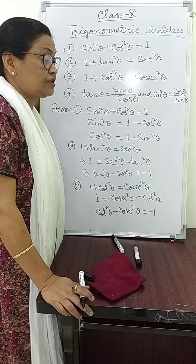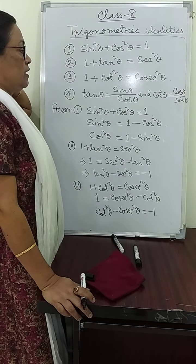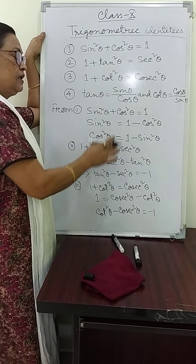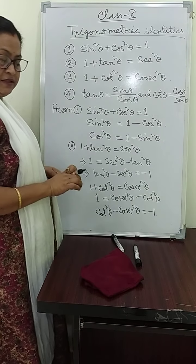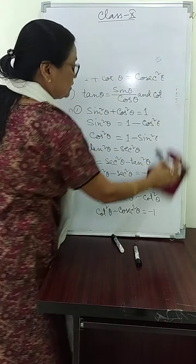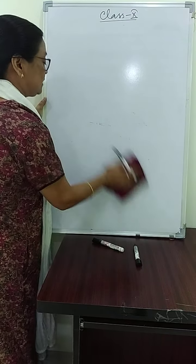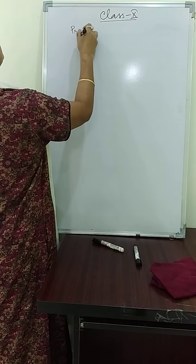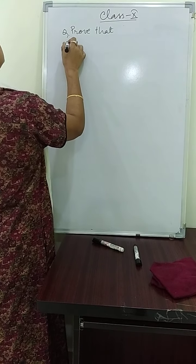So some identities will be given, and then we have to prove them by using these standard trigonometric identities. Now let us start with one question so we can understand. Prove that — question number one: